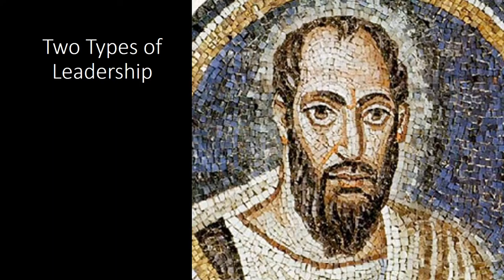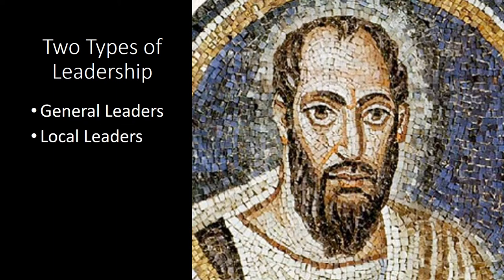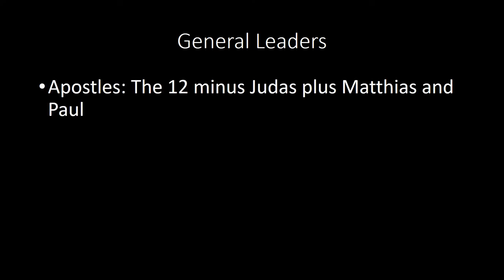Each of these evangelists faced martyrdom for their faith. Only John, the brother of James, the son of Zebedee, escaped martyrdom, although he was exiled to the island of Patmos. A growing church requires structure. The New Testament reveals two classes of leaders in the early church: general leaders and local leaders. Apostles, prophets, and teachers comprised the general leaders in the early church, and their role and function encompassed ministry to the whole church. The Twelve — minus Judas Iscariot, but with the addition of Matthias and then later Paul — formed the apostolic leadership as the church grew.